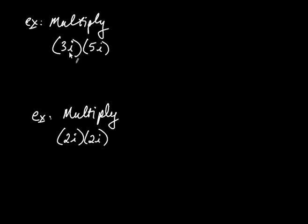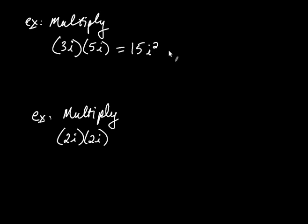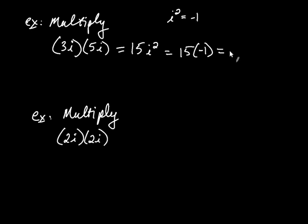We're going to work with i like we work with the variable x. Let's multiply 3i by 5i. We treat the i like an x, so 3 times 5 is 15, and then i times i is i squared. Now remember: i is the number that you square to get negative 1, so i squared is equal to negative 1. Everywhere you see an i squared, you can replace it with negative 1. So this is 15 times negative 1, which is negative 15. That would be our answer.